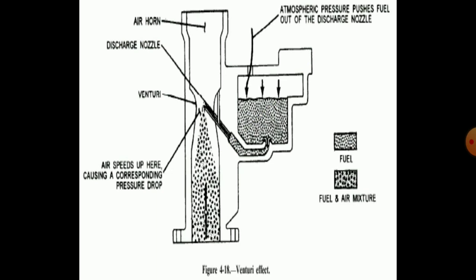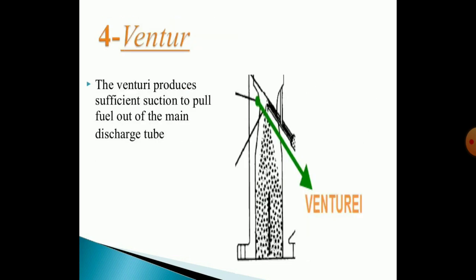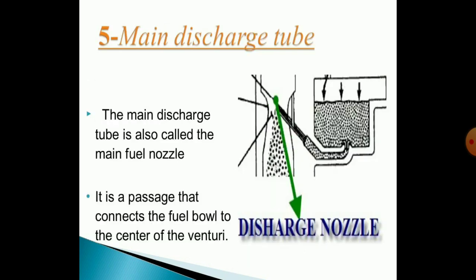At the throat point, there is a venturi which forms the correct air-fuel mixture inside the carburetor. The throttle valve is provided at the bottom of the venturi — this dish-shaped valve controls air flow through the air horn. When it is closed, it restricts the flow of air and fuel to the engine; when it opens, the air and fuel flow and engine power increases. The throttle valve combination with the venturi produces sufficient suction to pull fuel out of the main discharge tube. The venturi plays a vital role in the smooth running of the carburetor. The main discharge tube, also called the main fuel nozzle, is the passage connecting the fuel valve to the center of the venturi.